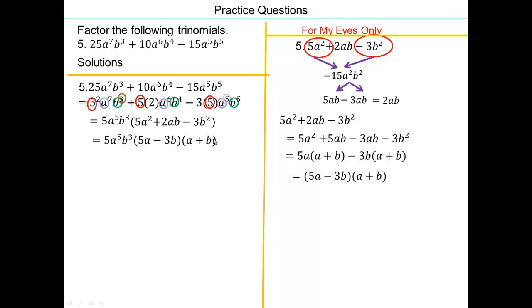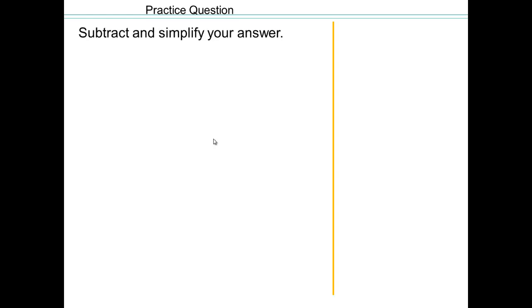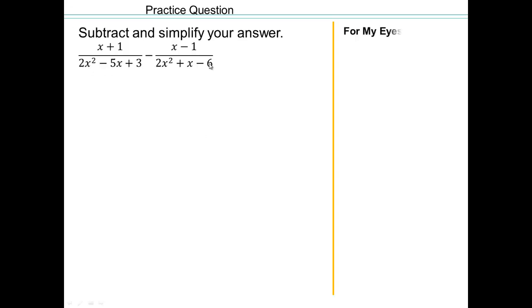If any of this is going too fast, don't forget — you can pause and rewind and go back. All right, so now let's try that. I haven't seen those in a while, so how can you do those? Remember, nothing new — it's fractions. So what's the first thing? You want to get a common denominator. The first thing I would do is take these and factor them.